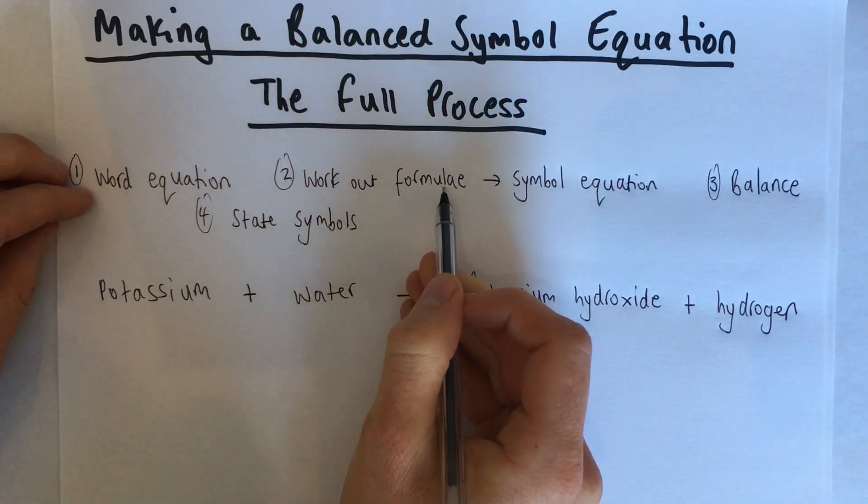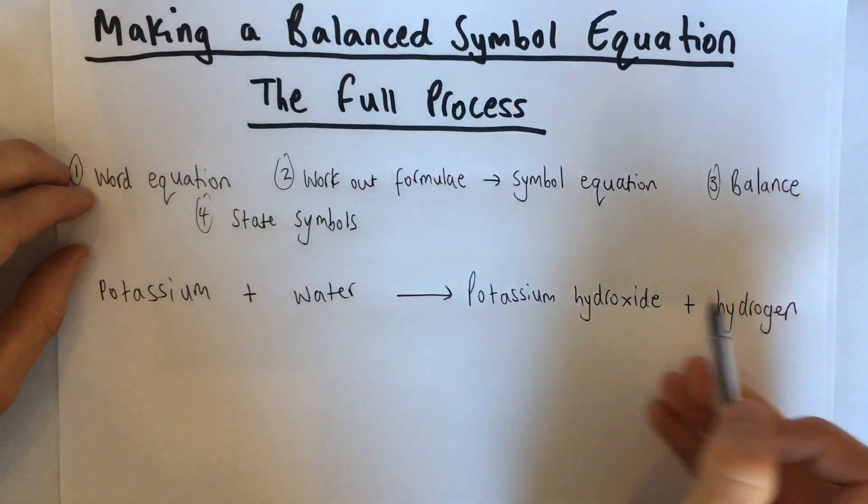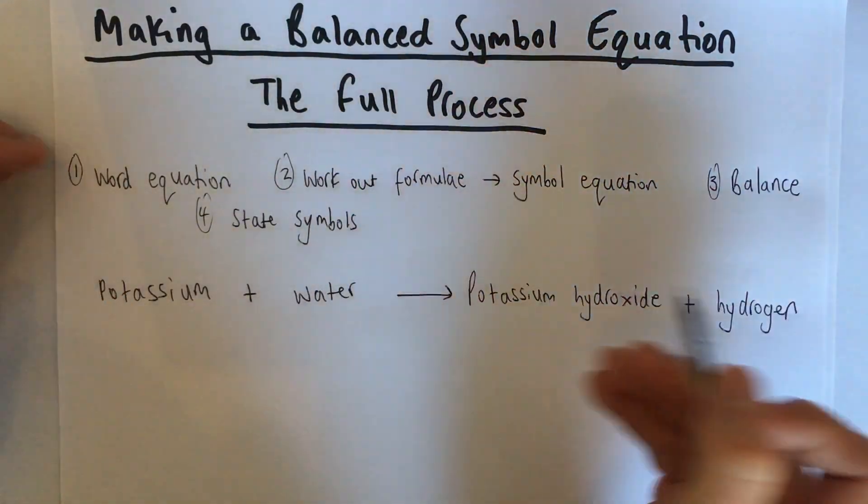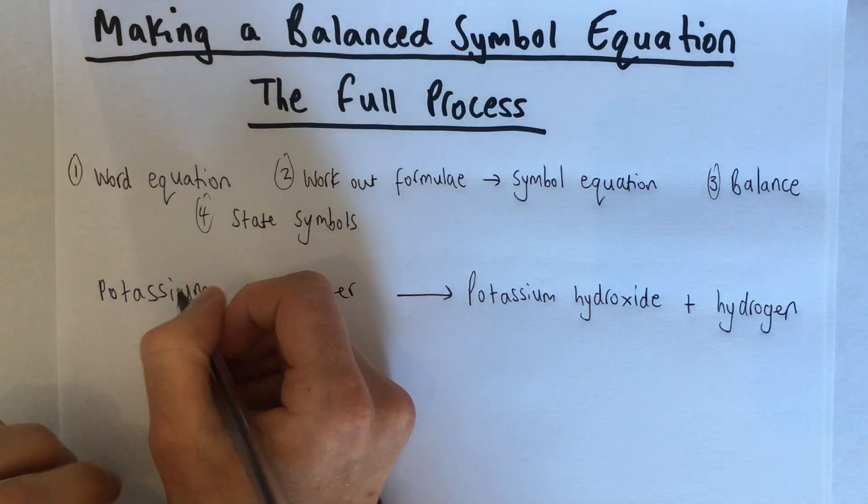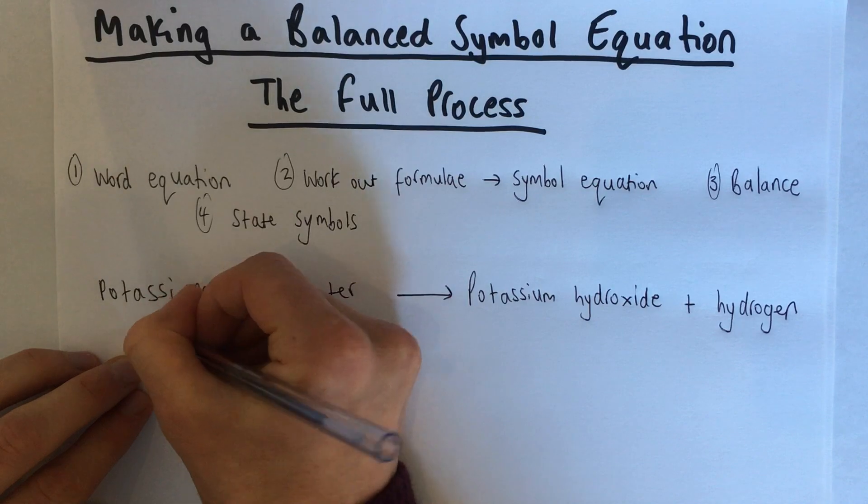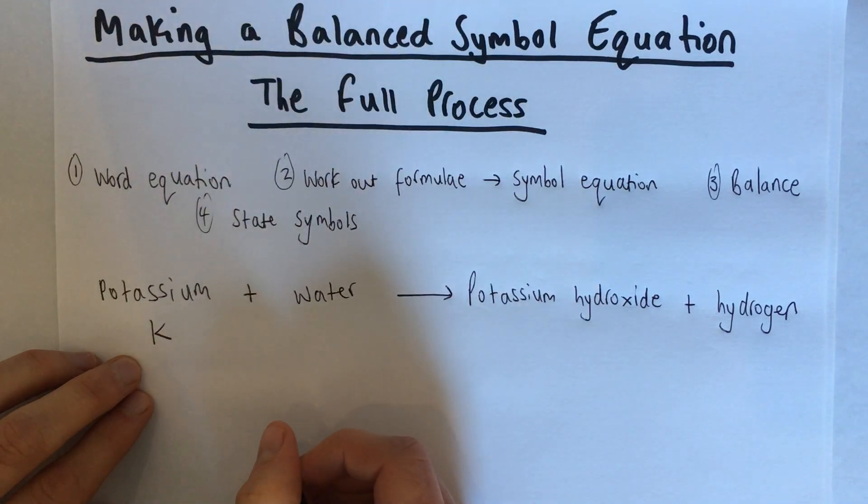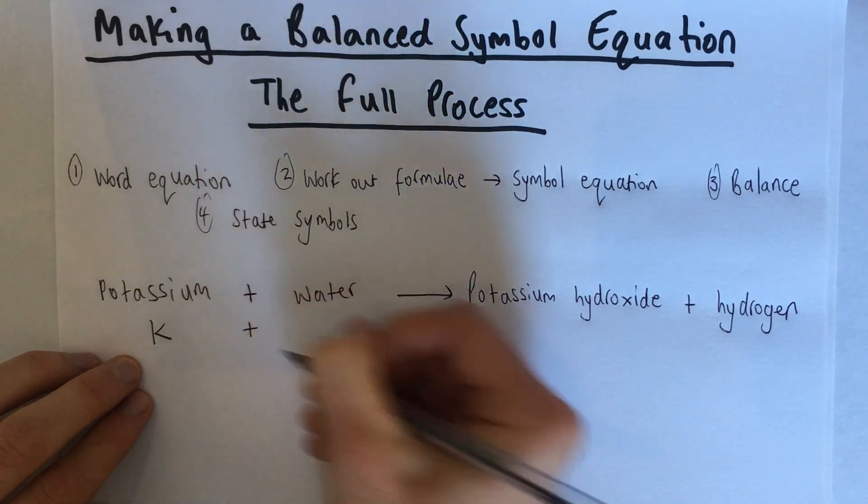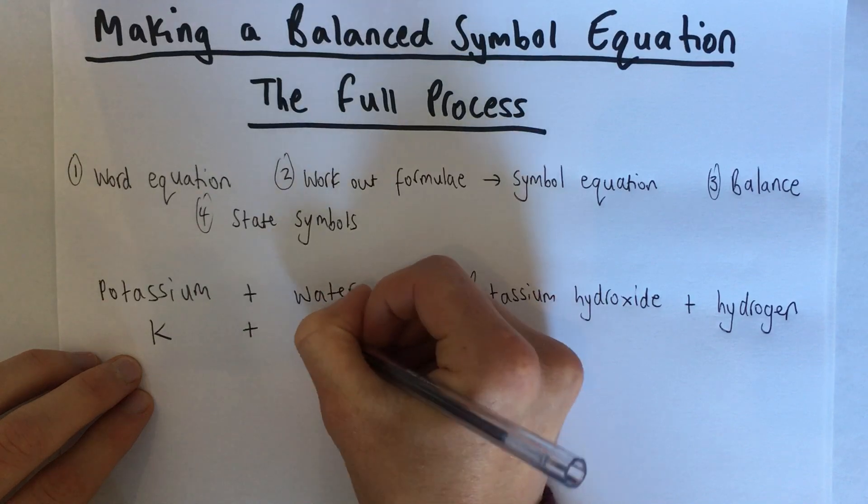Now we need to work out the formula for each of these four different things. And once we've put those in, we'll have a symbol equation. So follow the rules we know. Potassium is a metal, so it's just going to be its element symbol as the formula. So just a K for that one. Water, we've known that since primary school. That's H2O.